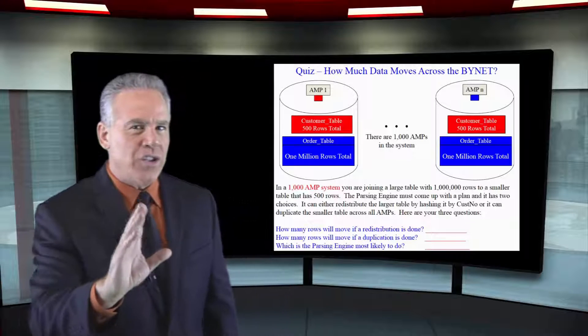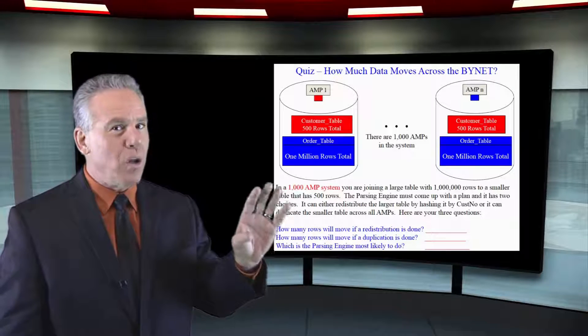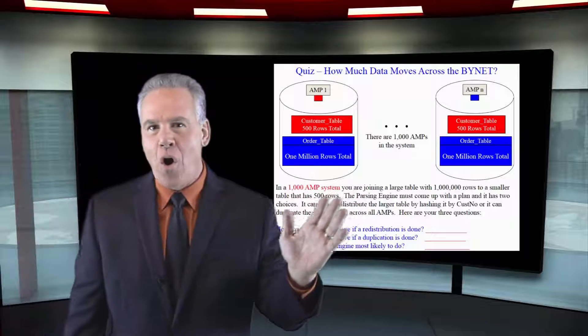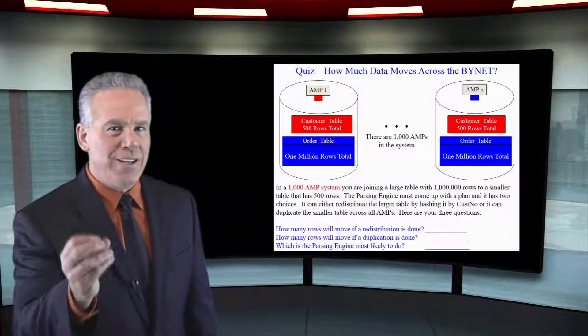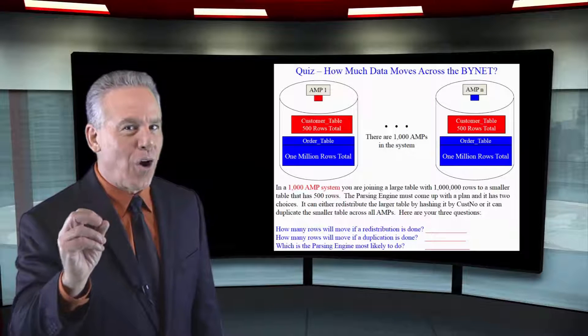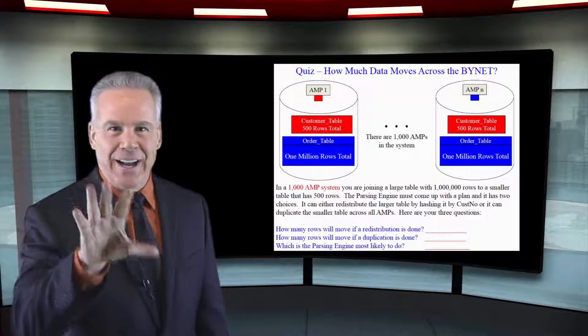The parsing engine is going to have two choices. Do I duplicate the smaller table across all the amps? Or do I redistribute the larger table? Not by order number, but by customer number.